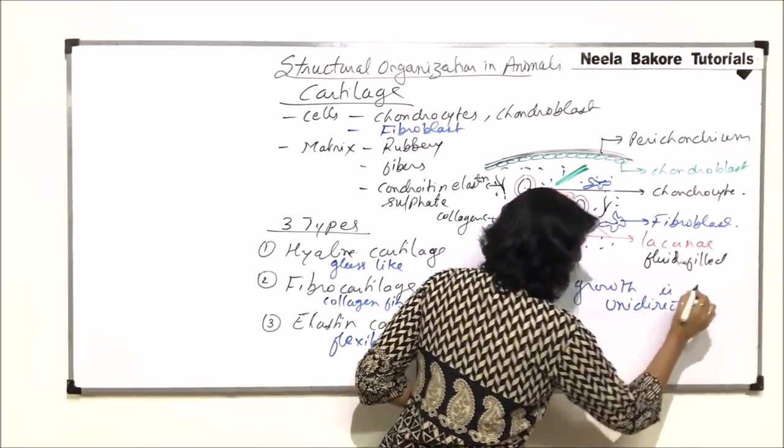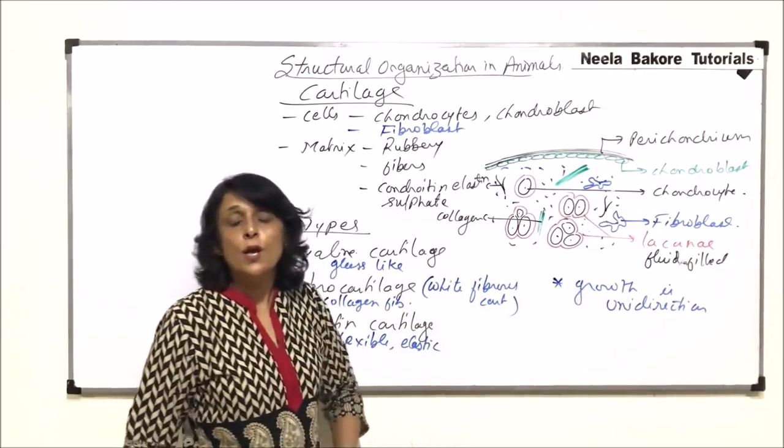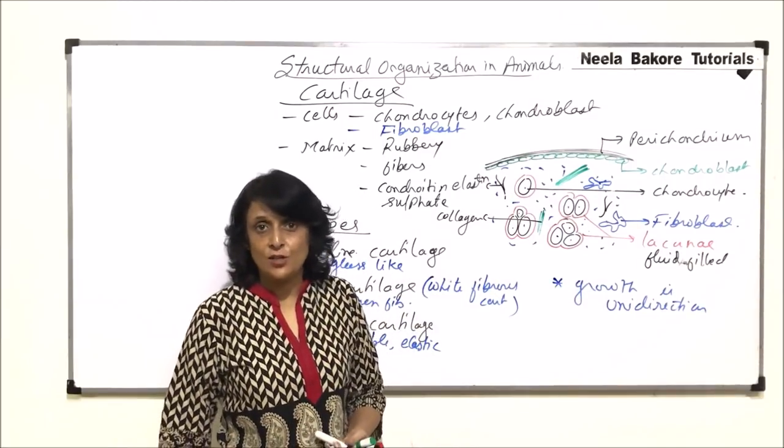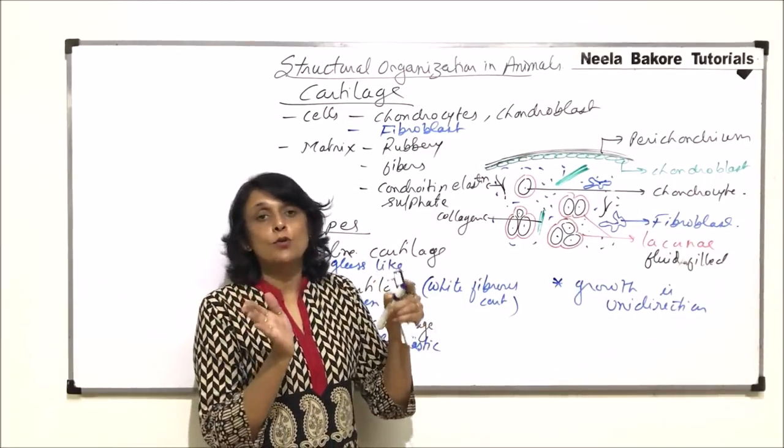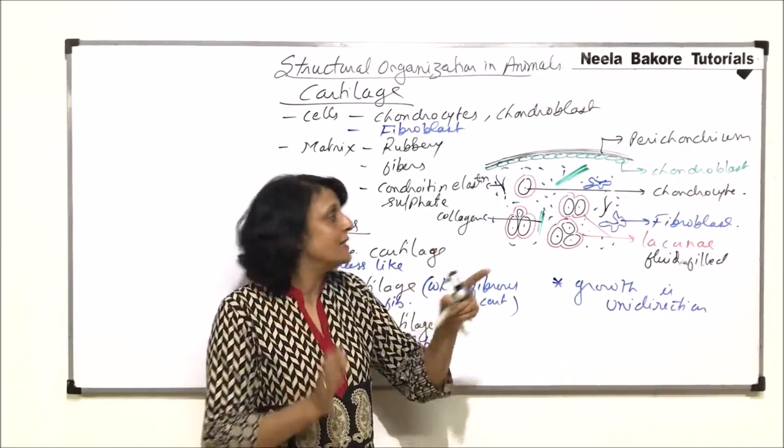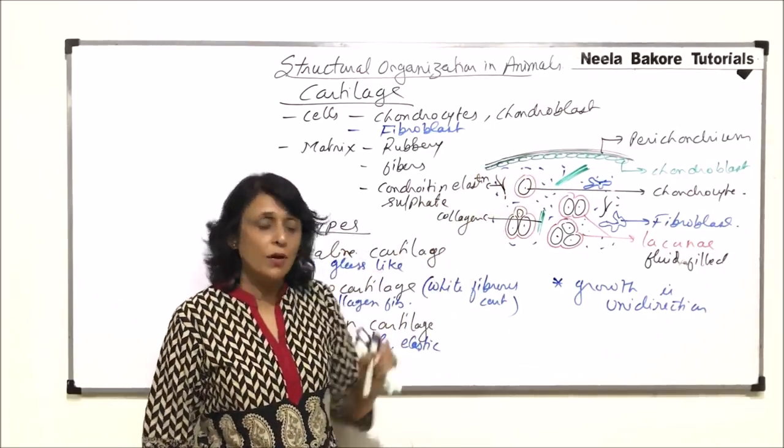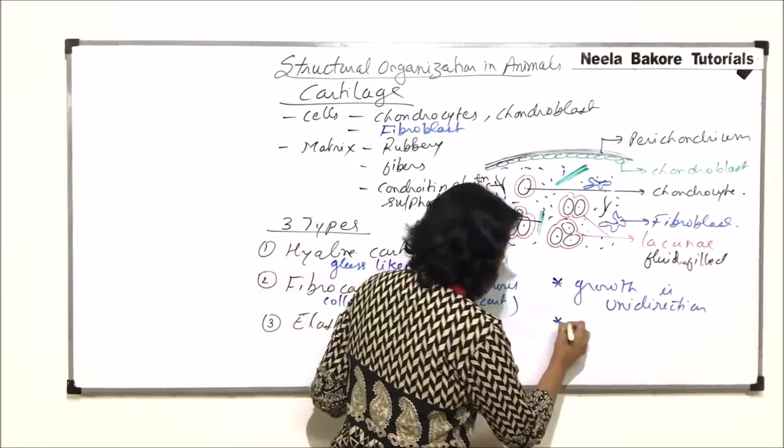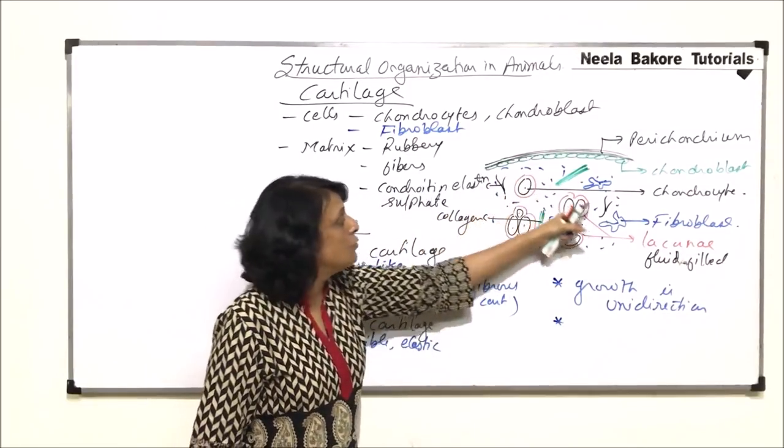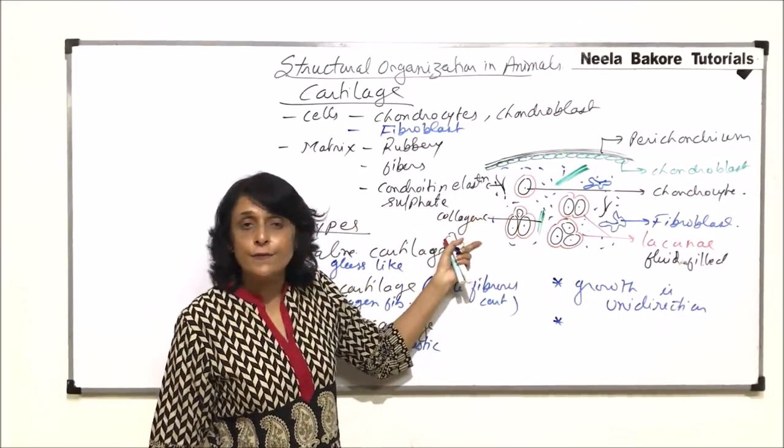If you remember, we said in bones the growth is bidirectional because there were osteoblasts on both sides. Here the chondroblasts are only on one side. Another important thing: there is no blood vessel or nerve in the cartilage.